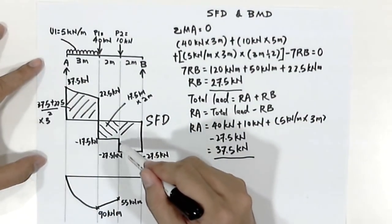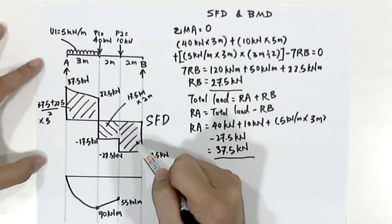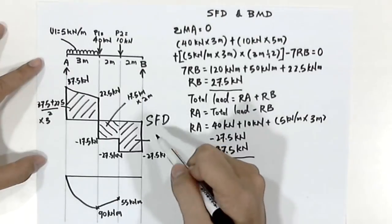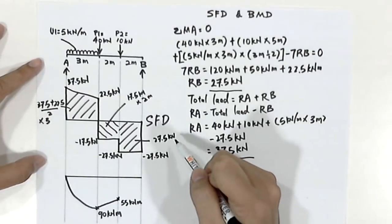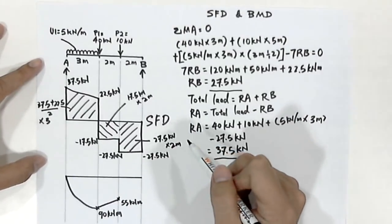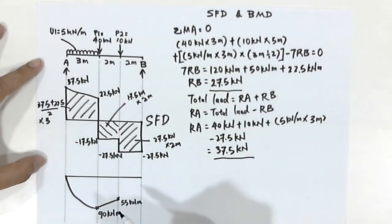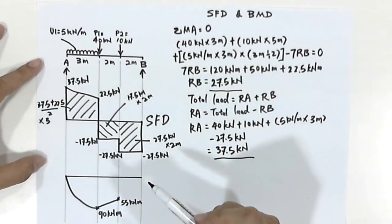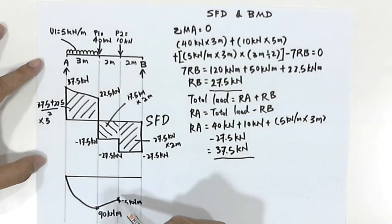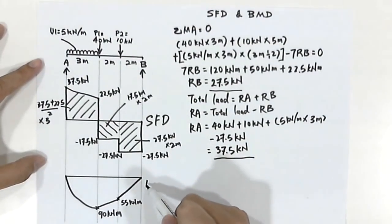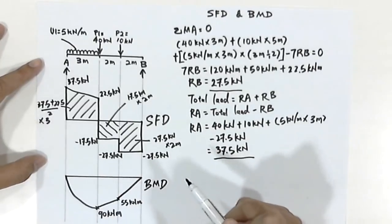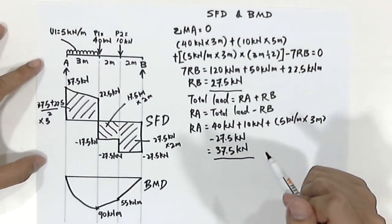To complete the bending moment diagram, we calculate the last section, which is 27.5 kilonewtons times 2 meters. The answer we'll get will be 55 kilonewton meters. Following the equilibrium theory, we draw a linear line that goes back to 0. If you can draw this, that means your bending moment diagram is completed. Thank you for your attention.